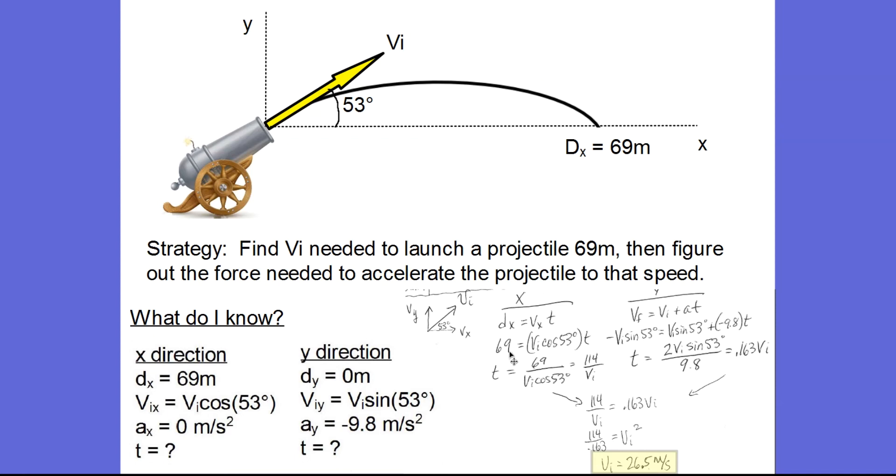So I'm going to choose these two equations in the X and the Y which give me two equations with two unknowns and I can solve for the initial velocity 26 and a half meters per second. That's using our traditional way of solving it.